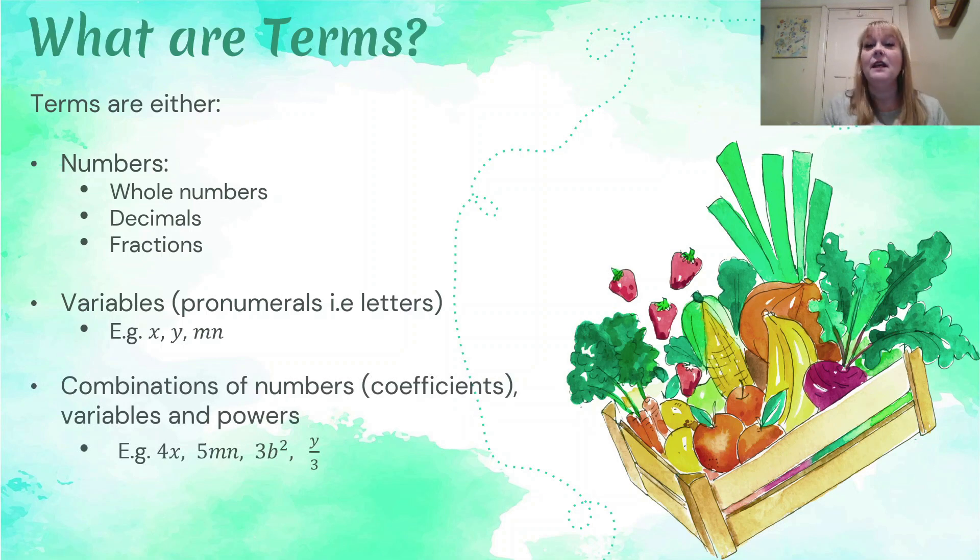We've also got collections of numbers which we call coefficients. If you remember from our last video, combined with variables and perhaps even powers. So we've got some examples here. We've got 4x, so that's a combination of a coefficient of 4 with a pronumeral of x.